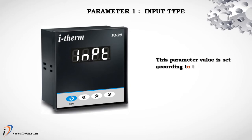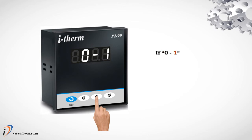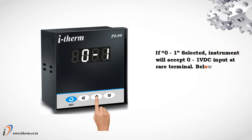Parameter 1: Input Type. This parameter value is set according to the type of sensor connected to the controller's input terminals. If 0 to 1 is selected, the instrument will accept 0 to 1 volt DC input at the rear terminal.